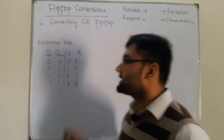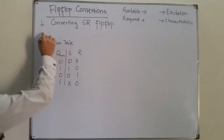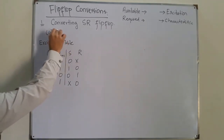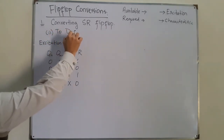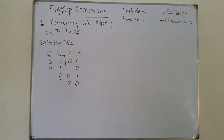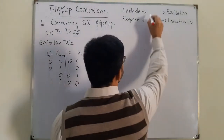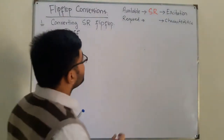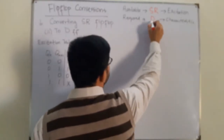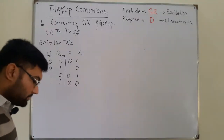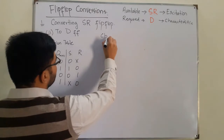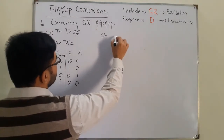Today we see the next conversion: converting from SR flip-flop. We've seen the JK, today let's see the D flip-flop. Now, the available flip-flop is the SR flip-flop and you have to draw the excitation table for it. This excitation table is already drawn from the previous video. The required flip-flop is the D flip-flop, for which you have to draw the characteristic table.